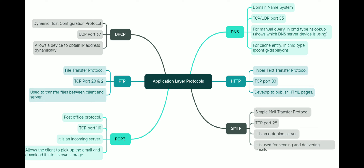The third application layer protocol is DNS, which stands for Domain Name System. It uses TCP and UDP port 53. For a manual query, in the command prompt type 'nslookup', which shows the DNS server the device is using. If you want to see the cache entries present in your PC, type 'ipconfig /displaydns'.